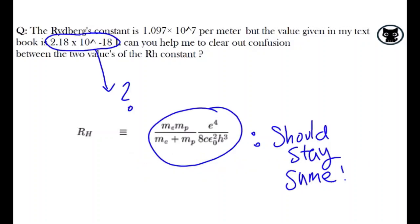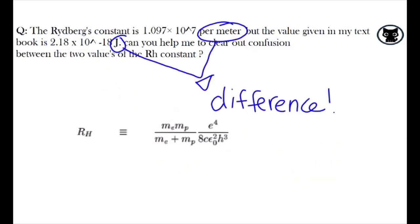But then why the other value, if these values within our equation must stay constant? What we first need to note is that the second value is in terms of joules, which is a completely different unit than the per meter.